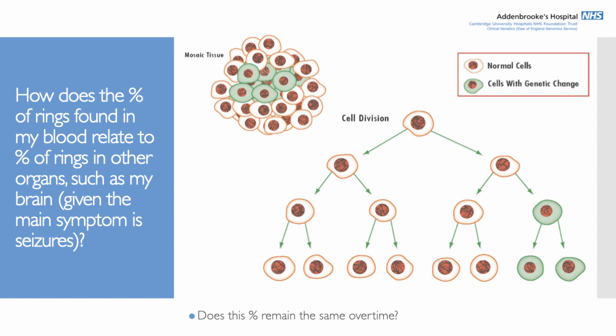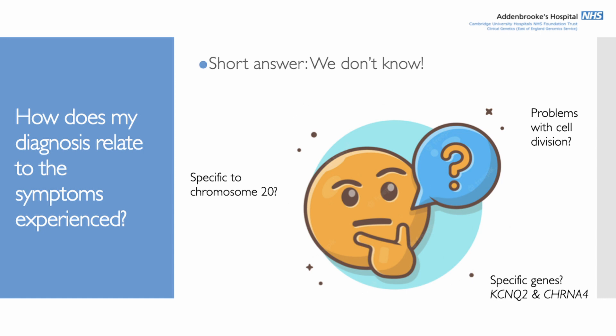As for whether this percentage remains the same over time, the percentage in the blood is likely fairly similar over time, but it's hard to say that with complete certainty. Another common question is how the diagnosis relates to the symptoms experienced. The short answer is we don't know — there's no clear answer yet. One theory is that the structure of a ring chromosome in a cell can affect cell division and viability, because when cells divide they replicate all their genetic material, and ring chromosomes can get tangled in that process.